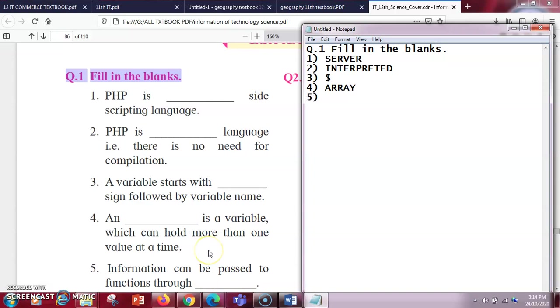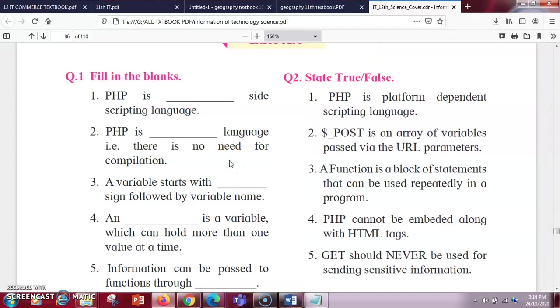Next, information can be passed to functions through dash. If you want to pass any information to the function, whether you write an if function or while function, then you have to give the arguments in it. So whatever information you want to pass, you are going to pass with the help of arguments.